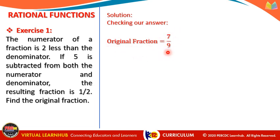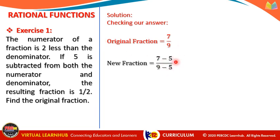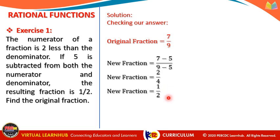To verify: starting from 7/9, subtract 5 from both numerator and denominator: (7 − 5)/(9 − 5) = 2/4 = 1/2. This confirms the condition is satisfied. Therefore, the original fraction is indeed 7/9.